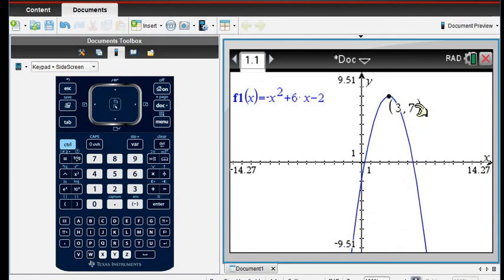And then you would do the same thing to the other side, and it gives you your point is at 3, 7. If it's in the way so you can't see it, you can grab it and move it out of the way. So 3, 7 would be our answer.